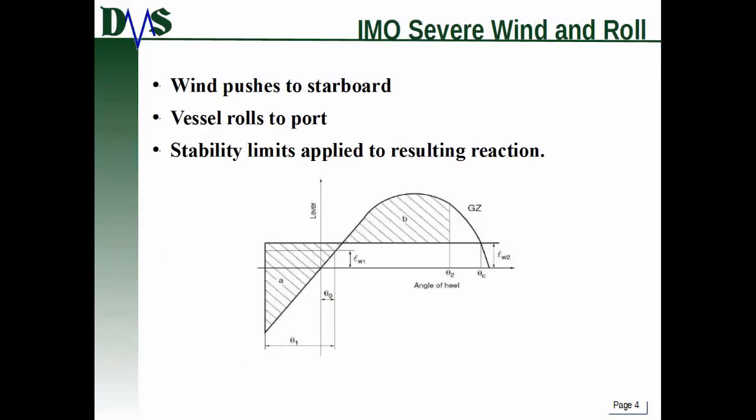Let's talk about the IMO Severe Wind & Roll Criteria. I'm not here to teach you regulations, so I'll give you the basic stripped-down version. It starts off with the idea that the wind is pushing the vessel to starboard, but the vessel rolls over to port. You start on the port side, so you have some stored-up energy, and then the wind hits you and rolls the vessel to starboard. Part of that rolling is the energy already stored from going to port, and then there are stability limits from the wind pushing it farther. The IMO applies stability limits based on the resulting reaction. Region A is the initial port roll, and region B is the resulting heel from the wind.